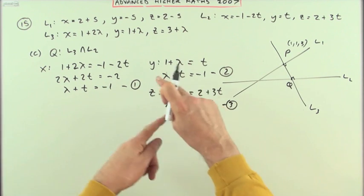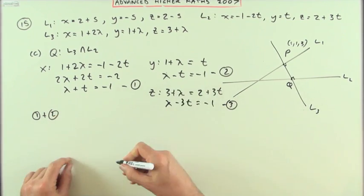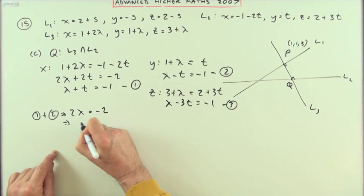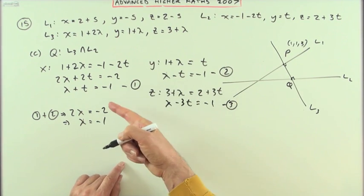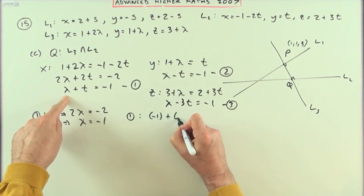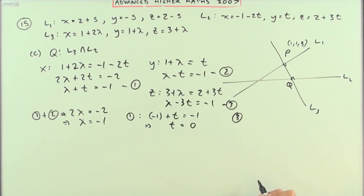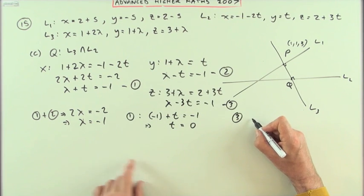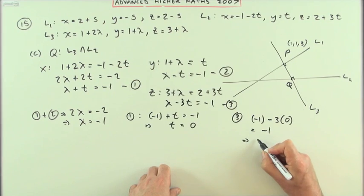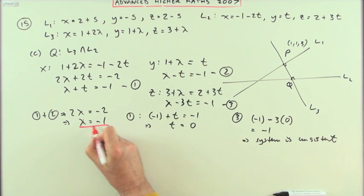Taking equations 1 and 2: adding them, the t's cancel, giving 2λ = −2, so λ = −1. Substituting back into equation 1: −1 + t = −1, so t = 0. Checking with equation 3: λ − 3t = −1 − 0 = −1. The system is consistent, confirming λ = −1 and t = 0.